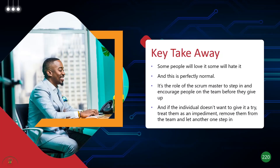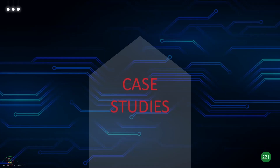If a team member doesn't want to give Scrum a try, they're affecting the rest of the team. Try to convince them, but if they're not convinced and don't want to follow it, you can mark them as an impediment and try to get another team member. If the individual not ready to buy in is management, then you have a bigger problem — you don't have their buy-in to begin with, making it very difficult to implement Scrum. Those are the key takeaways. Now let's look at a couple of case studies to see how Scrum was successfully implemented in multiple companies.